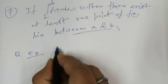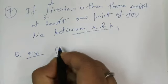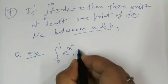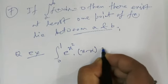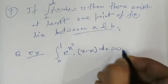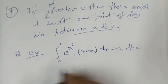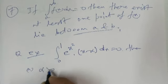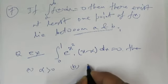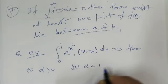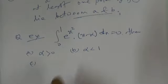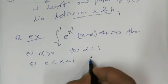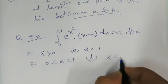Example: integral from 0 to 1 of e^(x²) multiplied by (x minus alpha) dx equals 0. Then — option A: alpha is positive; option B: alpha is less than 1; option C: 0 less than alpha less than 1; option D: alpha less than 0.